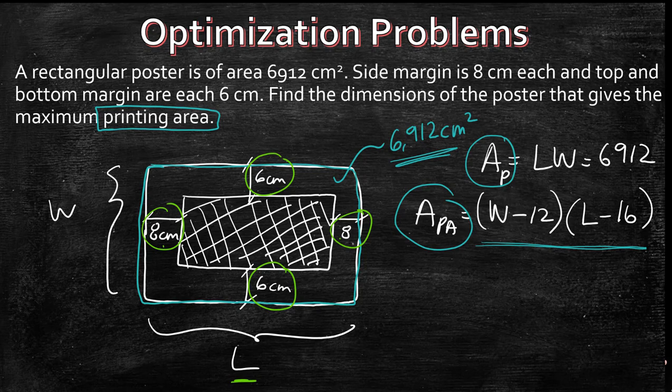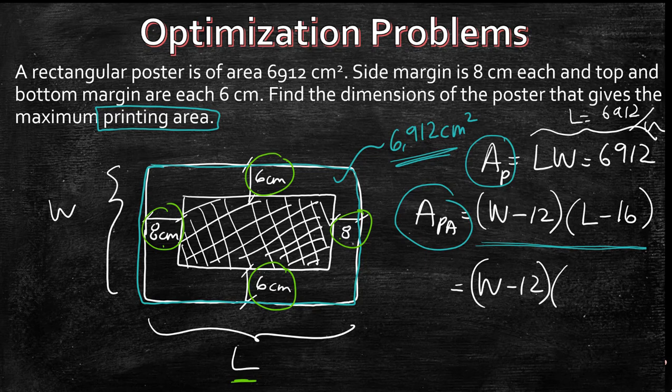So let's use the area of the poster to our advantage. Let's say we want to write everything in terms of W in our equations. So it'll be W minus 12 into L as what? So if you rearrange this guy, L is equal to 6912 over W. So L equals 6912 over W minus 16. Perfect. Now everything is in terms of W.